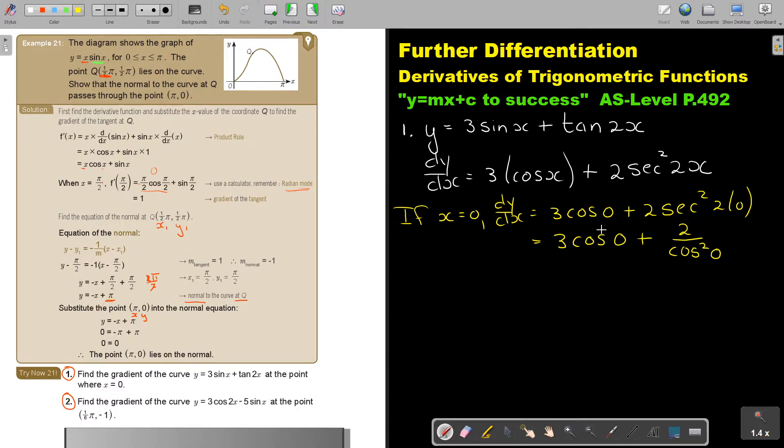If you are going to press that, say 3 times cos 0 and that is 3 plus 2 divide bracket cos cos 0. So, 0 plus the bracket cos squared equals 2. And the answer is 5. Let's answer the question. Find the gradient of the curve. Therefore, the gradient at the point where x is 0 will be 5. Let's do number 2.